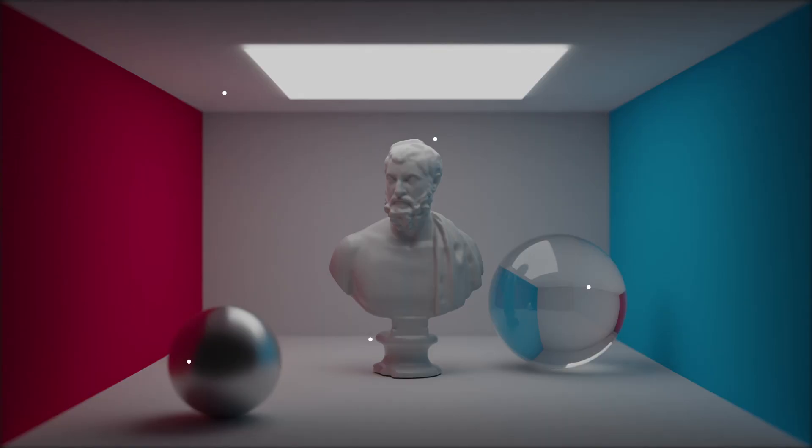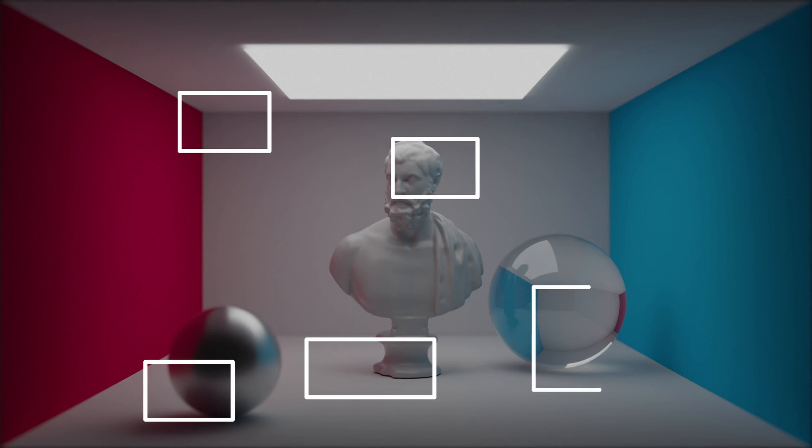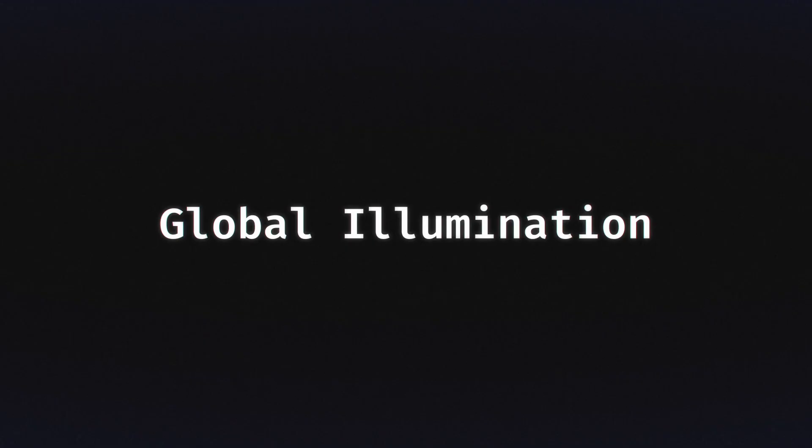Path tracing naturally simulates a huge number of effects which have to be deliberately bodged into other methods, almost for free. This includes but is not limited to soft shadows, ambient occlusion, depth of field, motion blur, reflection, refraction and caustics, the little glowy bits where the light has been focused, and most important of all, global illumination.